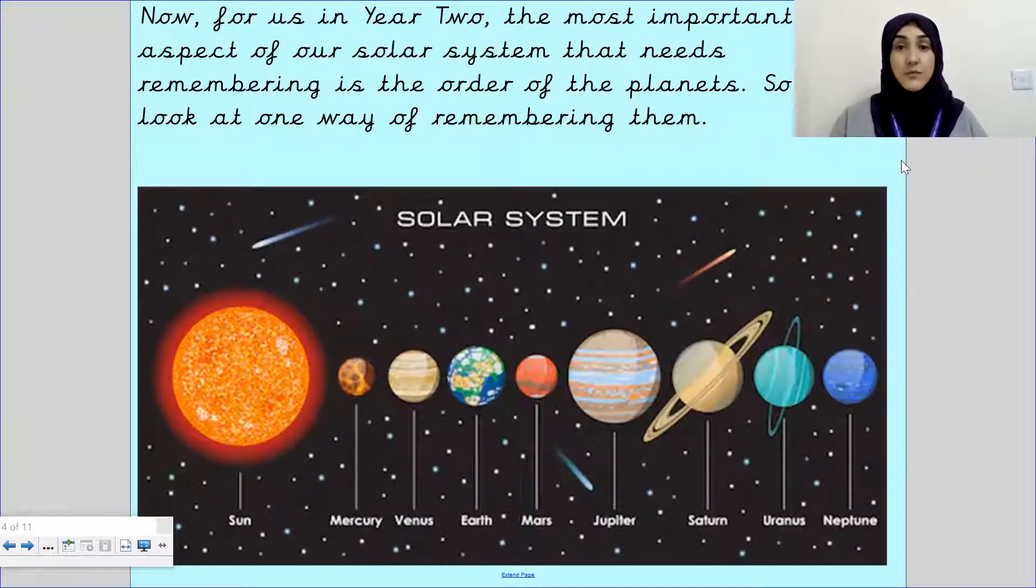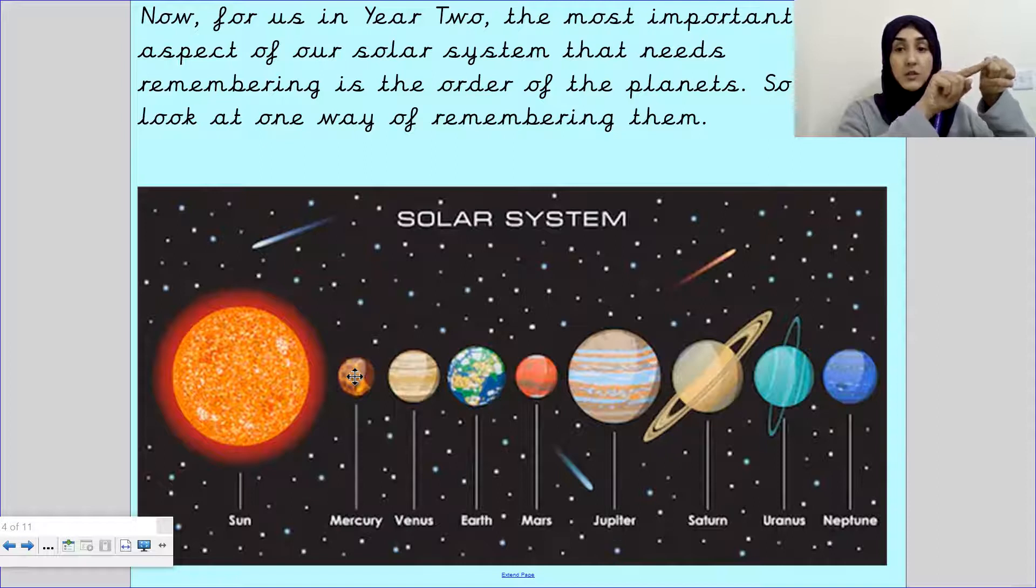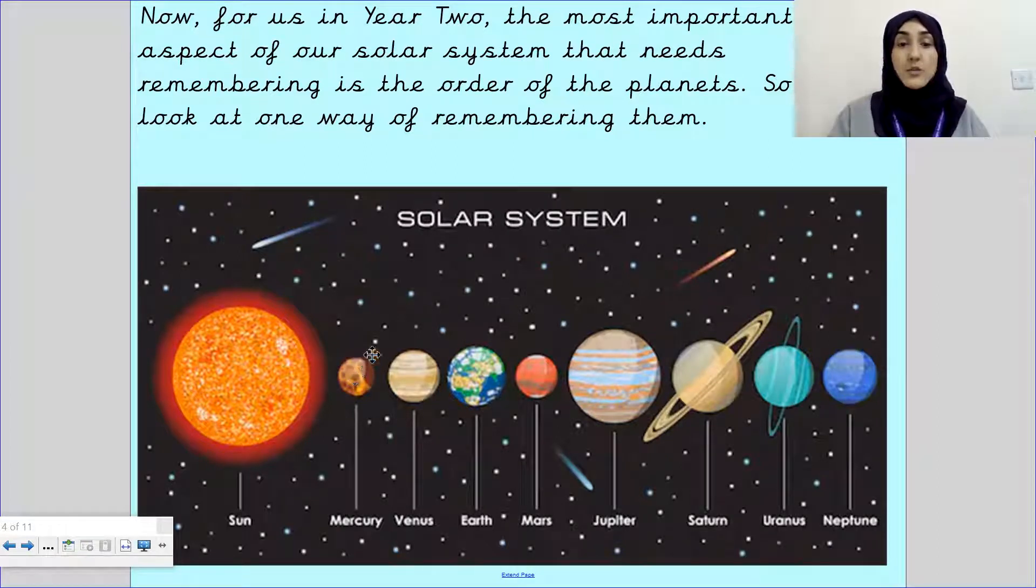So for us in year two, the most important aspect, the most important part of our solar system that needs remembering is the order of the planets. So an order of the planets means which one is first, there's eight all together. So which one is one, which one is number two, which one is number three, number four and so on. So we are going to look at a few ways of remembering the order that they go in. And it starts from the planet that is closest to the sun. Closest to the sun. So from left to right. So here is the sun, the closest to the sun. So which planet is the closest to the sun? Which one is number one?